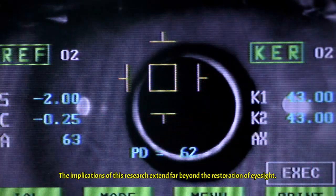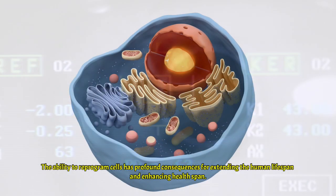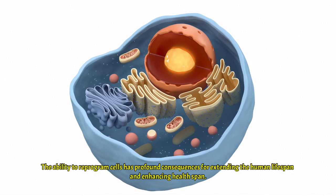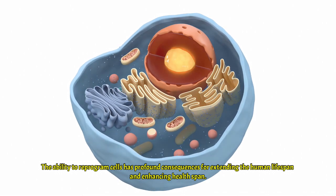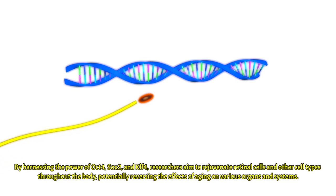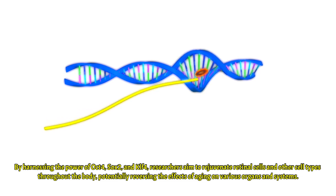The implications of this research extend far beyond the restoration of eyesight. The ability to reprogram cells has profound consequences for extending the human lifespan and enhancing healthspan. As we age, our cells accumulate damage and lose their ability to function optimally. By harnessing the power of OCT4, SOX2, and KLF4, researchers aim to rejuvenate retinal cells and other cell types throughout the body, potentially reversing the effects of aging on various organs and systems.